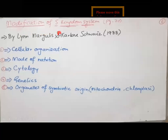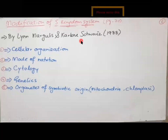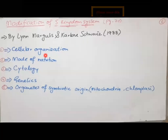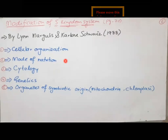There is a modification of the five kingdom system, again in 1988, by Lynn Margulis and Carolyn Schwartz. The previous five kingdom system was based on cellular organization — whether they were prokaryotes or eukaryotes, unicellular or multicellular eukaryotes — and the mode of nutrition: photosynthetic, decomposers, absorptive mode, ingestive mode, parasites, saprophytes, or those in symbiotic relationships.